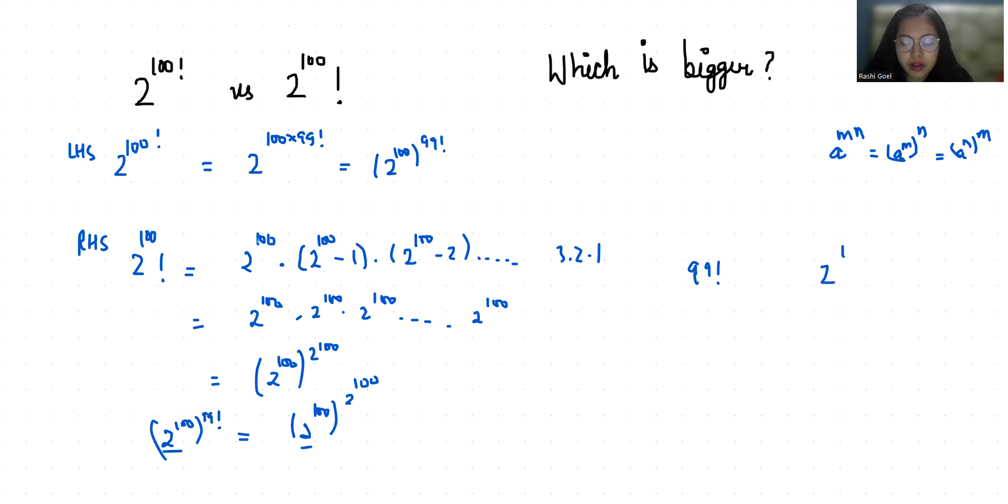Now 2^100 is 2 × 2 × 2 till 100 times, and 99! is 99 × 98 × 97 × 96 times till 1. We can cancel out some terms here.